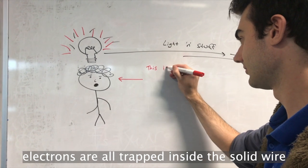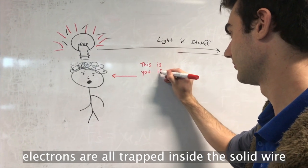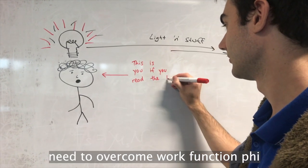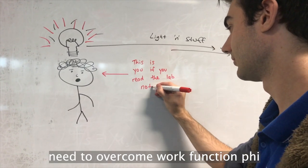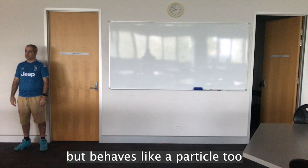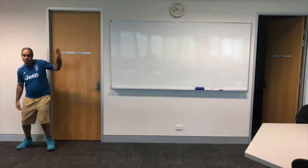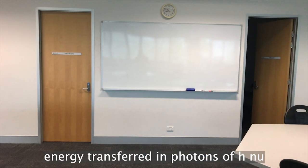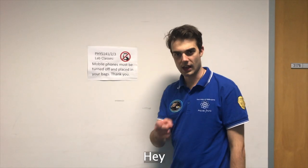Electrons are all trapped inside the solid, bound to the lattice, need to overcome work function phi. Light's a wave but behaves like a particle too. Energy transferred in photons of h nu.